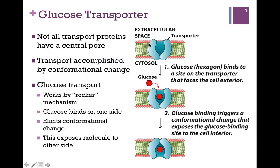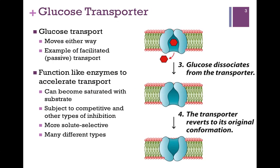Here's a figure from your book. In blue we have the transporter, and as you can see, the pore is exposed to the extracellular side in its starting position. Now we bind glucose — that's our red molecule here — and these transporters do tend to be very specific for their substances. So glucose binds, and that triggers a conformational change that rocks our transporter, so now it opens to the inside of the cell.